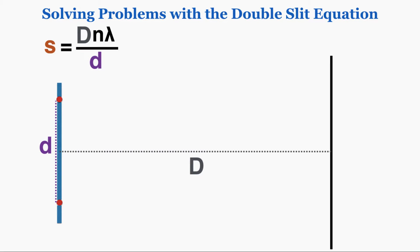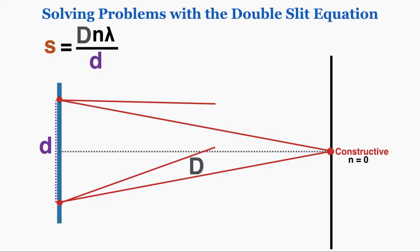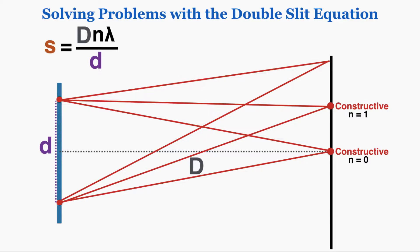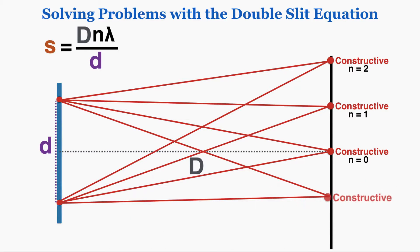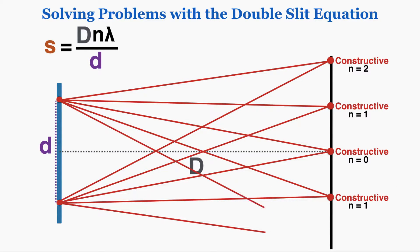Capital D is the distance from the diffraction grating to the wall, and lowercase d is the distance between the double slits. When light begins to pass through, constructive interference occurs at very specific spots. The integer value of n tells you how many points of constructive interference you are away from the central point of constructive interference — that's what n represents in the equation.